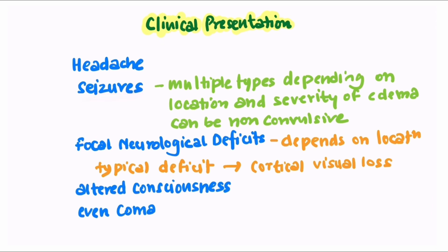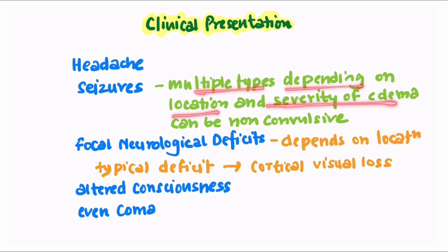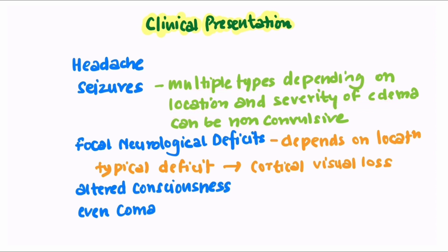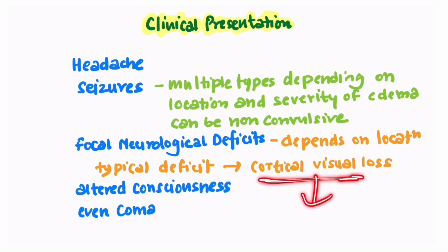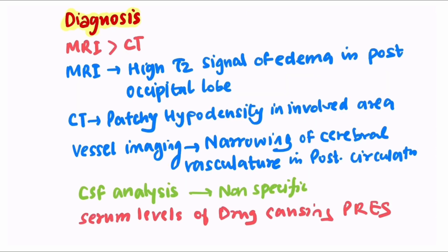Seizures can be of multiple types depending on the location and severity of the edema, and can even be nonconvulsive seizures. The focal neurological deficit depends on the location. The typical deficit is cortical visual loss, as PRESS involves the posterior circulation more, and this occurs due to occipital lobe involvement.